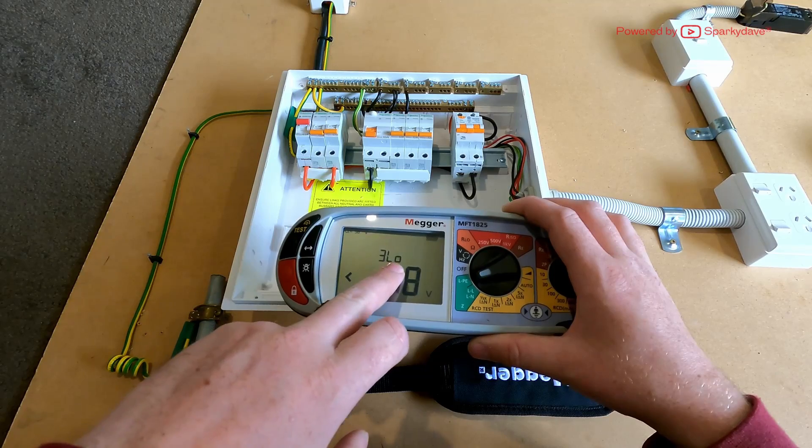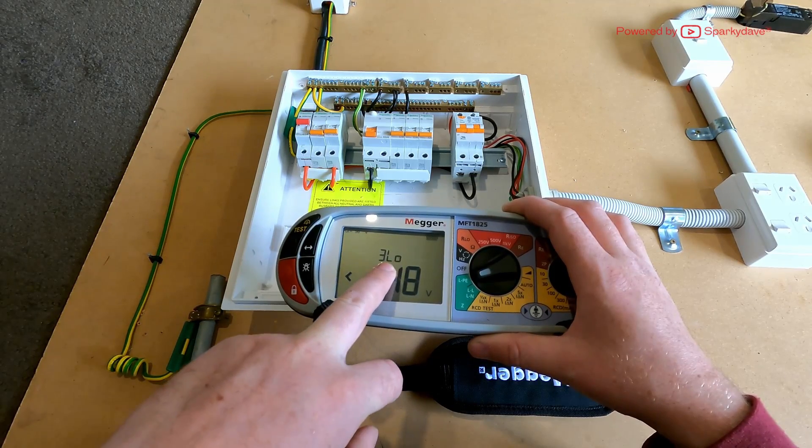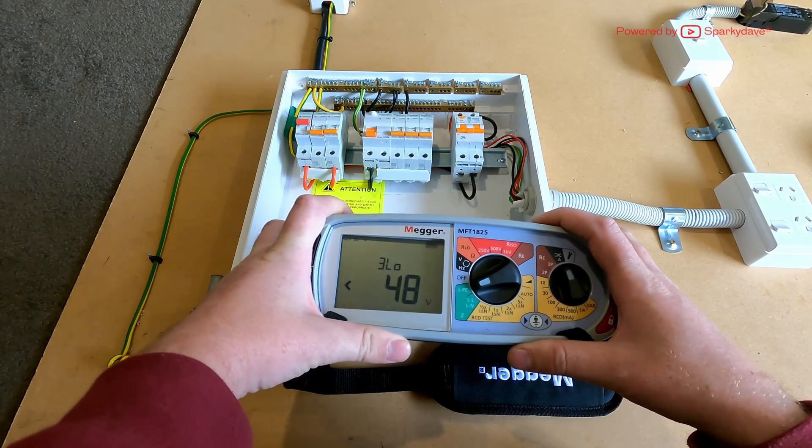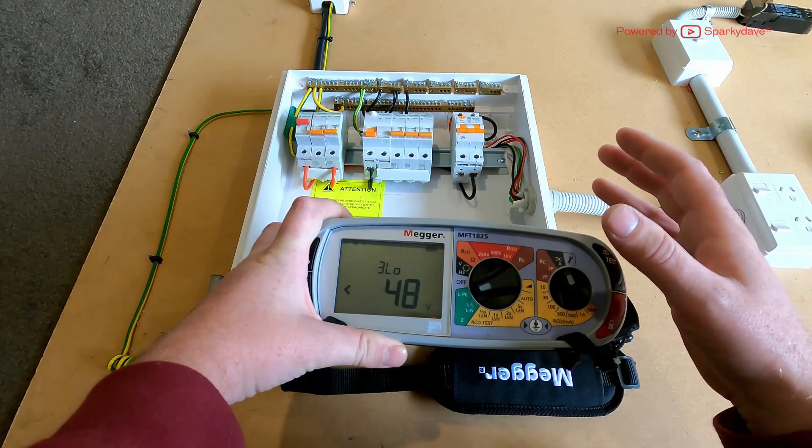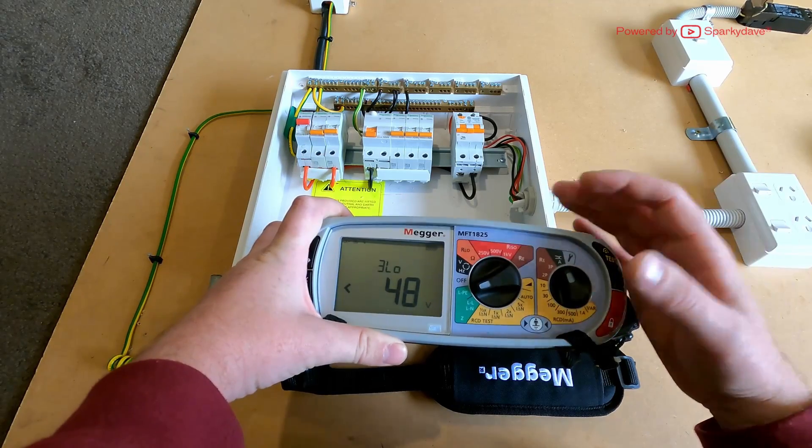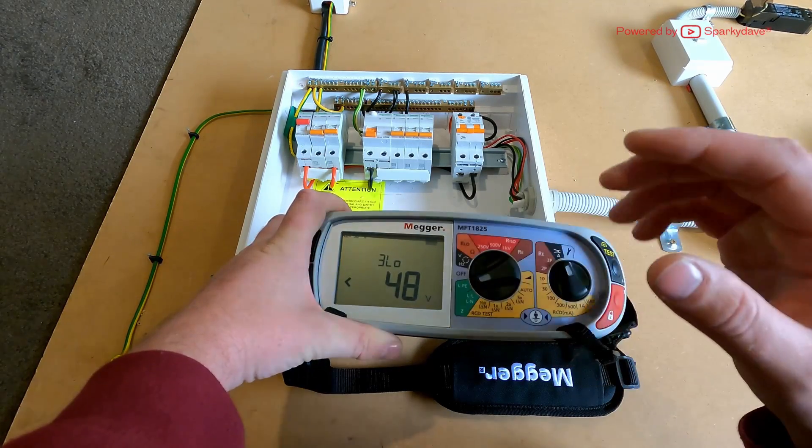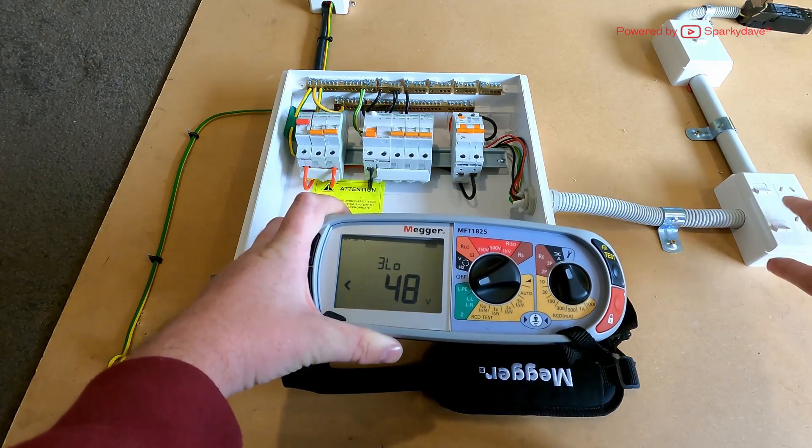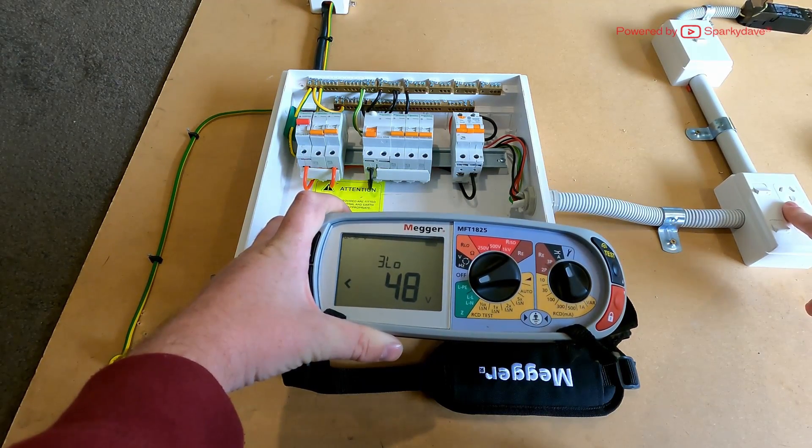By default it comes up with our three lead low current test. That's what the 3LO stands for. Now this test is specifically designed not to trip your RCDs, or to give you the best chance not to trip them. It's never guaranteed, so you'd use this test on the load side of your RCD circuit, so on your socket circuits.